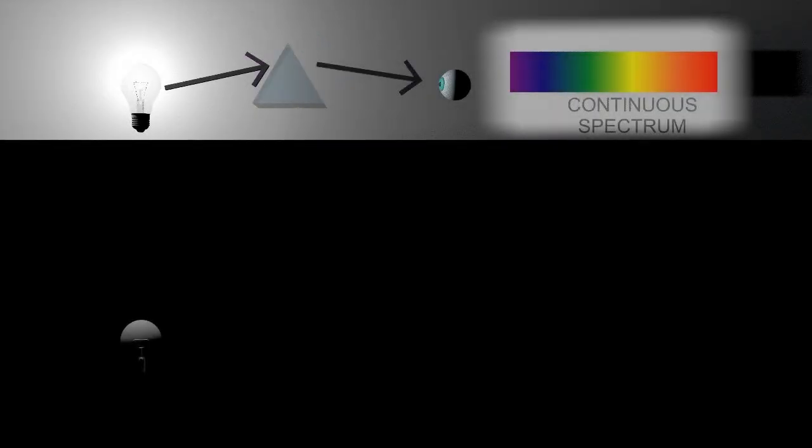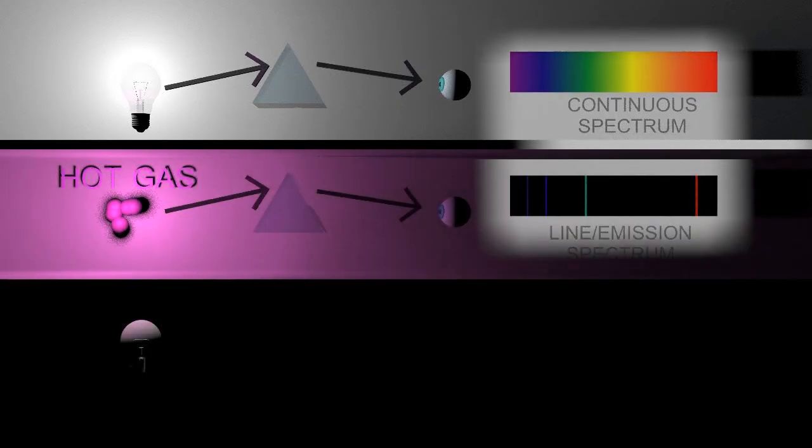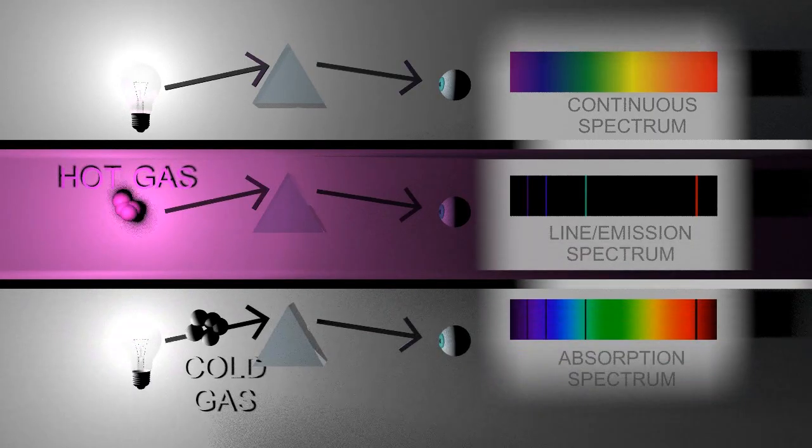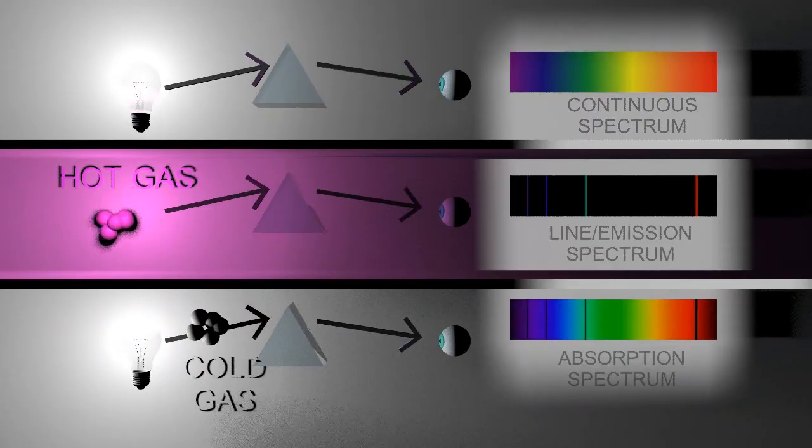So to summarize, a continuous spectrum is from a hot light source giving out all wavelengths. A gas of the right temperature and composition could give off a line or an emission spectrum, and if you combine those two you're going to get an absorption spectrum.